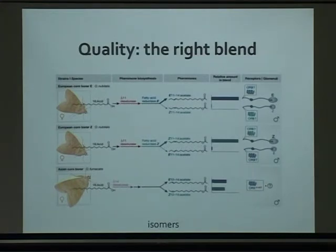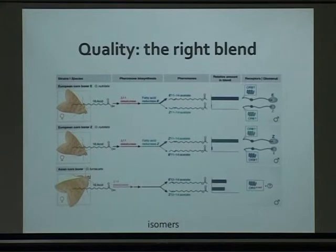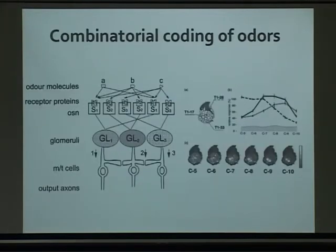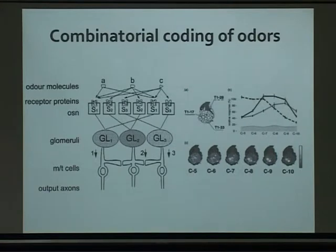This provides a very straightforward mechanism for speciation — for the arising of new species. You start with a signal which is a blend, then some individuals start producing slightly different blends. By chance, other males are sensitive to that blend, and they start mating together. At a certain point they stop cross-mating, the proportions diverge, and you're left with a new species. This seems to be an effective mechanism for speciation in moths.